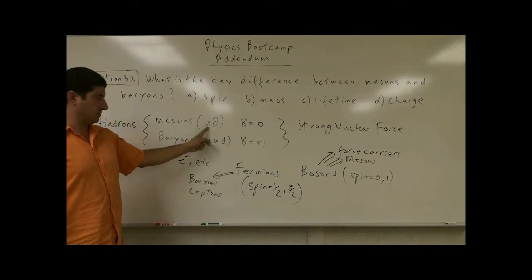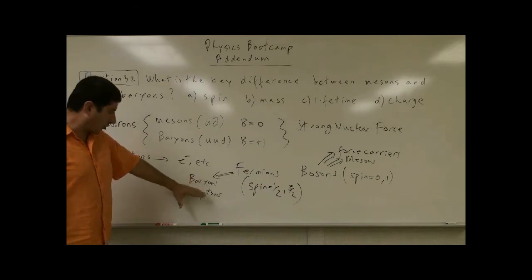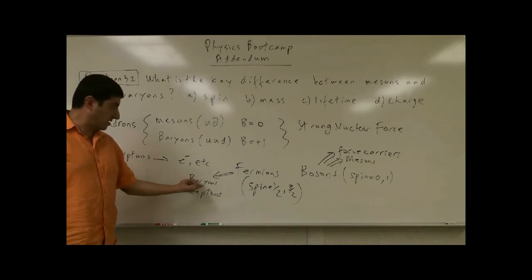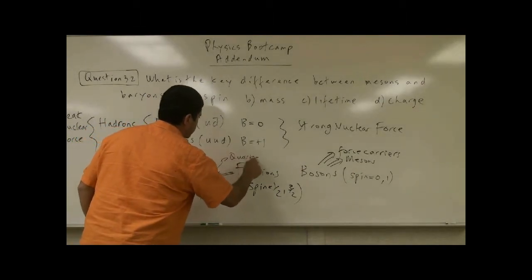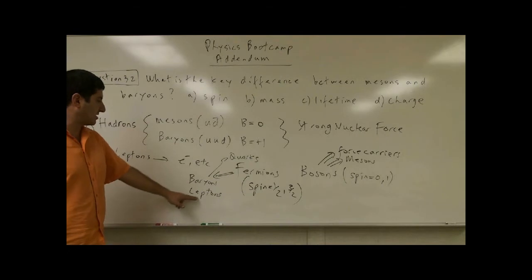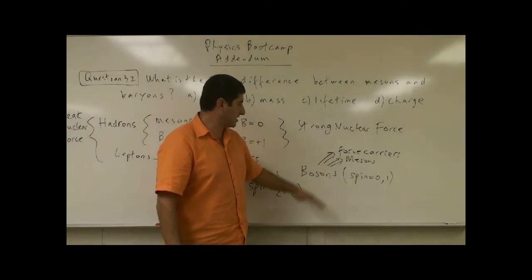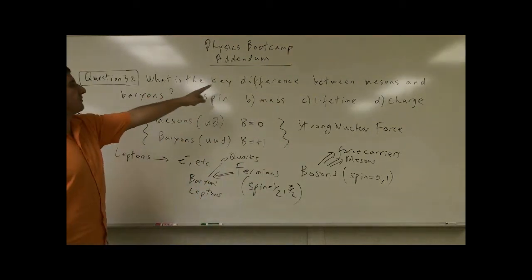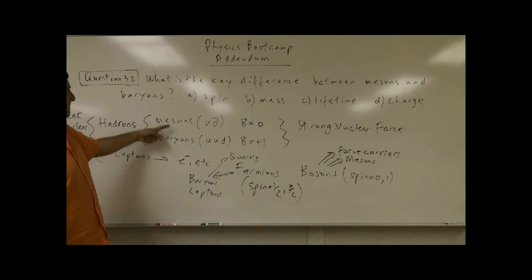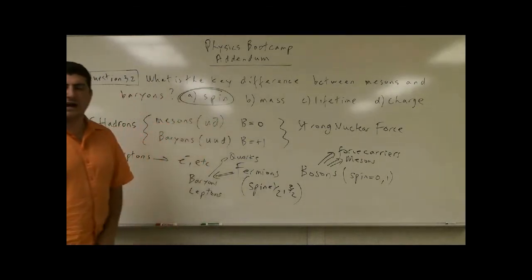So where would you put the quark? Well, quark has a spin half. So quarks, which make up baryons, are fermions. We could add quarks to this list. Quarks, baryons, leptons are all fermions. Force carriers, mesons are bosons. So what is the key difference between mesons and baryons? Mesons and baryons, key difference is their spin.